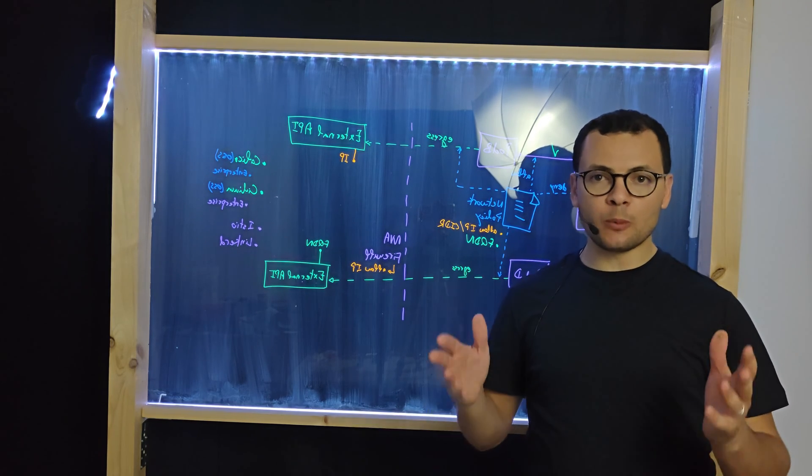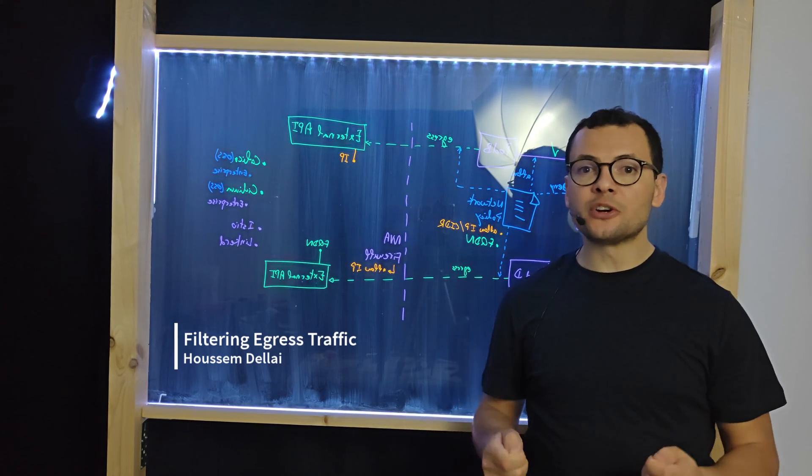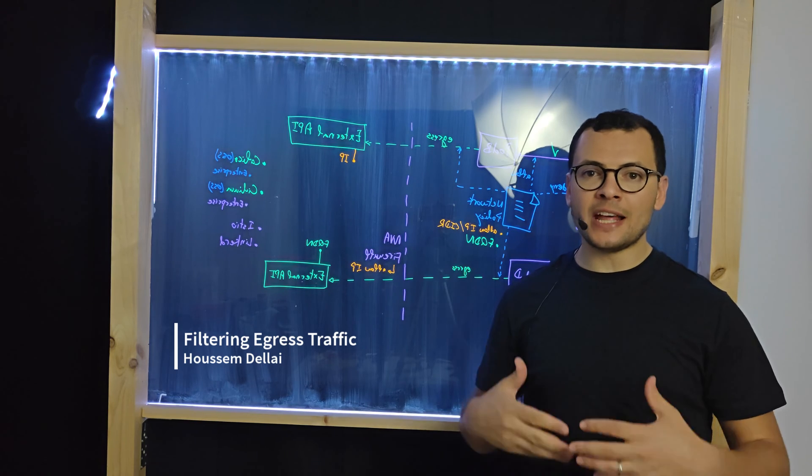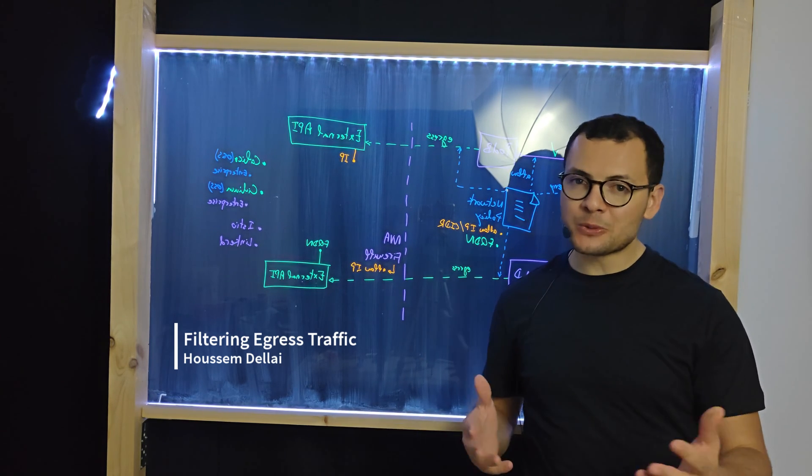You will learn in this lightboard session how to use Kubernetes network policy to filter egress traffic based on an IP address or an FQDN. Let's see how this works.